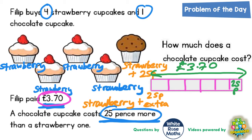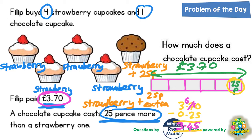The obvious thing to do next is to take off the 25 pence from £3.70. So £3.70 take away £0.25: zero take away five, you can't do, so borrow from the seven — seven becomes six and the borrowed one makes zero into ten. Ten take away five is five, six take away two is four, three take away zero is three. That gives us £3.45.